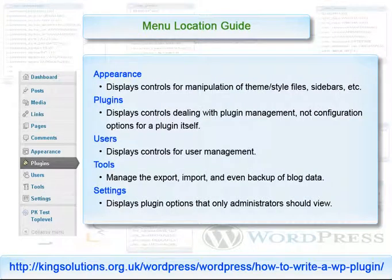The appearance menu should contain tools for the manipulation of themes, style files such as cascading style sheets, sidebars, etc. The plugins menu should contain controls for dealing with plugin management. It should not contain configuration options for the plugin itself. The users menu should contain controls for user management. The tools menu should manage the export, import, and backup of blog data — in other words, the maintenance of your blog. The settings menu should contain tools for displaying options that only administrators should view or modify. With the previous information in mind, let's see how we tell WordPress about our menus and options pages.